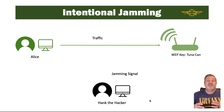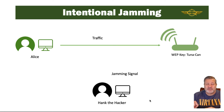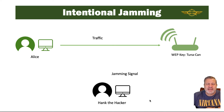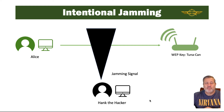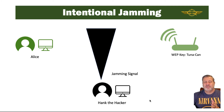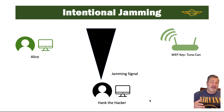In intentional jamming, we see Alice here connecting to the wireless access point that she normally uses. Hank, the hacker, is also there, and he broadcasts a jamming signal across that wireless network that makes it impossible for Alice to communicate with the wireless network, causing a denial-of-service attack using jamming.